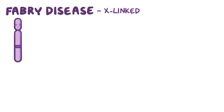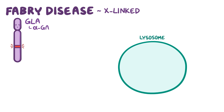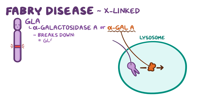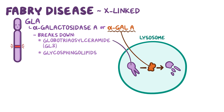Fabry disease is a rare X-linked condition caused by mutations or pathogenic variants in the GLA gene that codes for a lysosomal enzyme called alpha-galactosidase A, or alpha-gal-A. The alpha-gal enzyme normally breaks down large molecules called globotryosylceramide, or GL3, and other glycosphingolipids, so that small parts of the big molecules can be recycled for the body to use again.